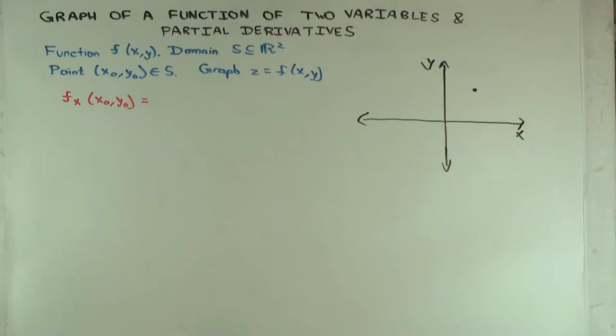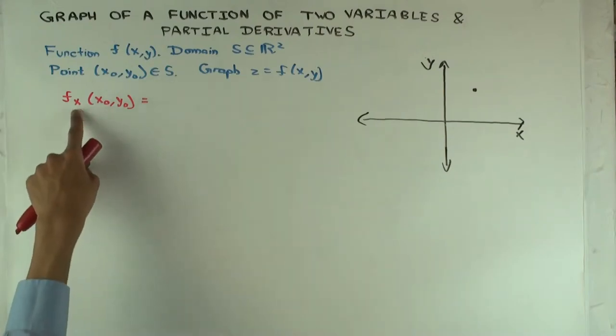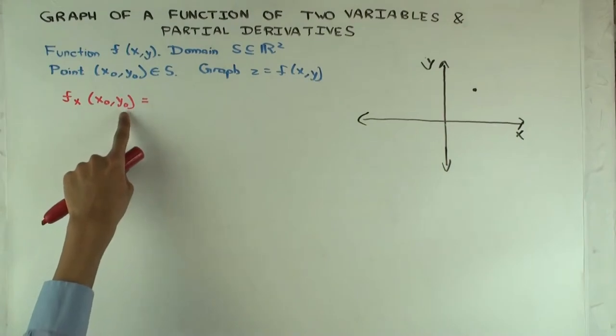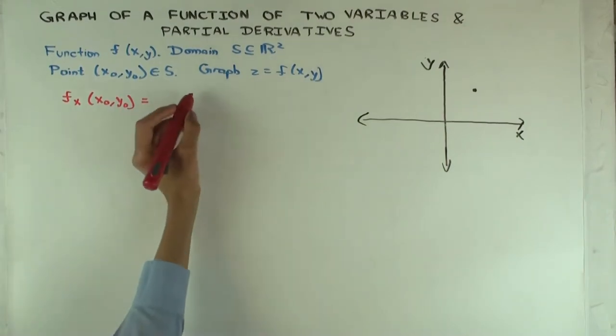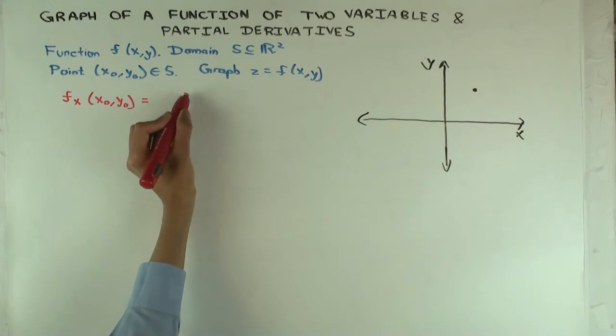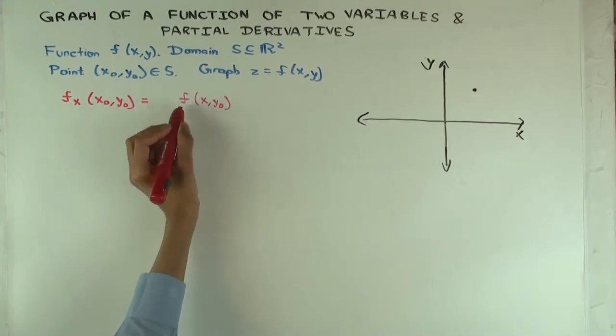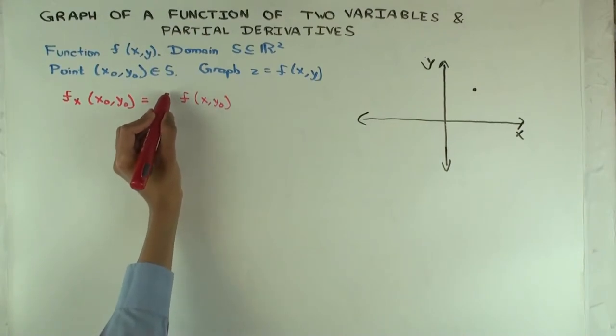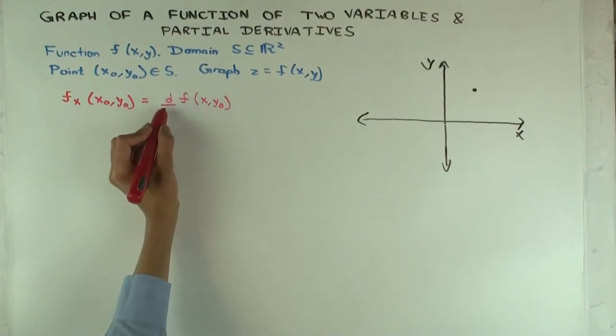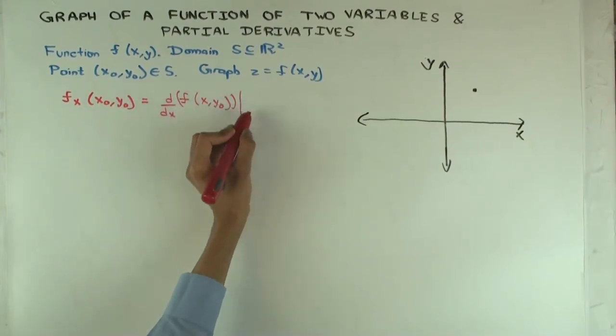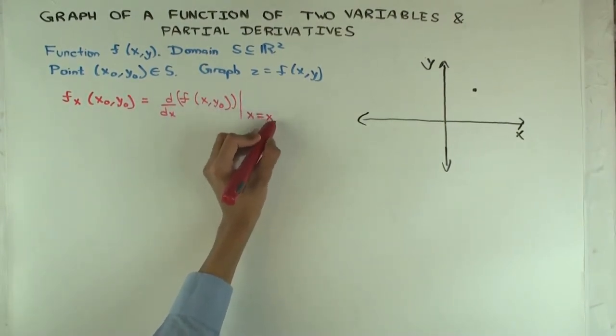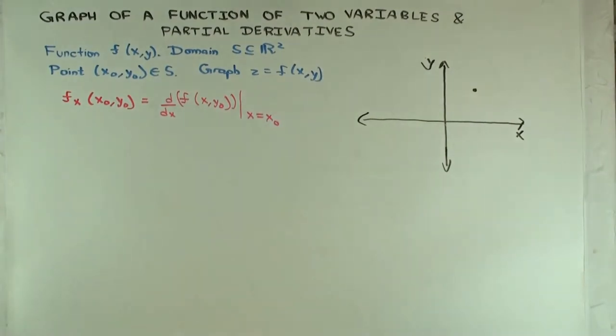You keep one of the variables. Well, so we are doing partial derivative with respect to x, so you keep y0 fixed. So, you basically are looking at the function f of x, y0, just a function of x. Then you're differentiating with respect to x and evaluating this at x0. So, that's the definition, remember?